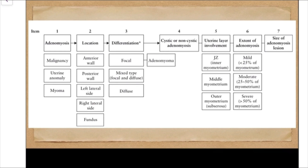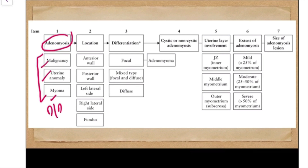Let's assume we have diagnosed that the patient is suffering with adenomyosis and we are not dealing with differentials or close mimickers like a fibroid, any anomaly, or malignancy. We are sure we are dealing with adenomyosis — we will see how to diagnose it further in this video. For now, let's consider we are sure we are dealing with adenomyosis.